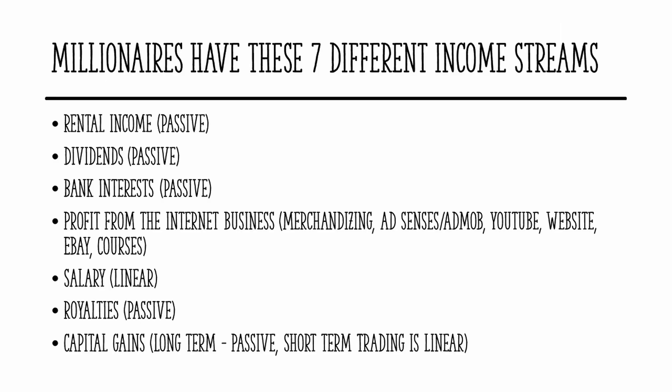Statistically, millionaires have seven different income streams, and these can be spread across the three categories we learned today. Some of the popular income streams among millionaires are rental income, which is passive — you buy it once and you will have rent and cash flow every month. Another is dividends, which are passive — based on how often your company pays you the dividend, you will continue to earn this passive income, and you can also earn capital gains on top of it.